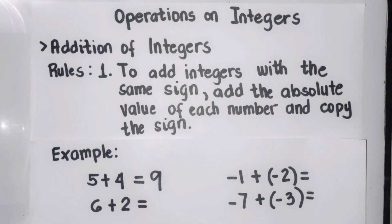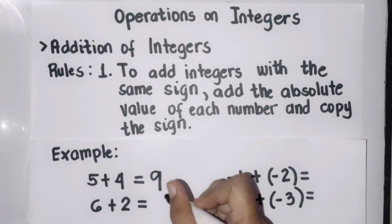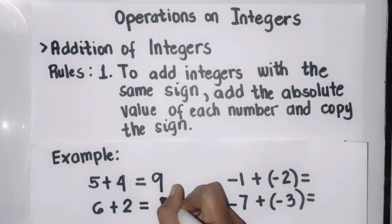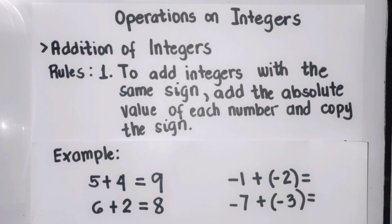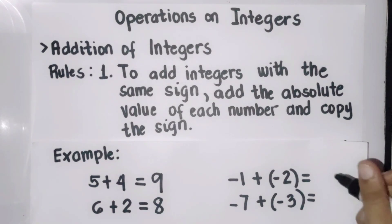Another example: six plus two is eight. Let's proceed to both negatives. We have negative one plus negative two. The absolute value of negative one is one, and the absolute value of negative two is two, so one plus two is three.